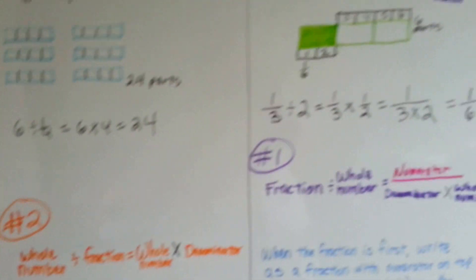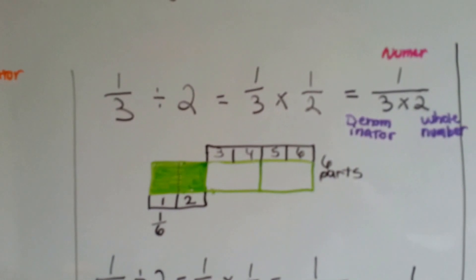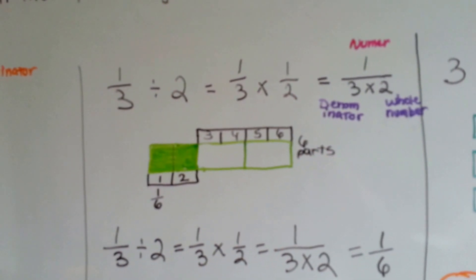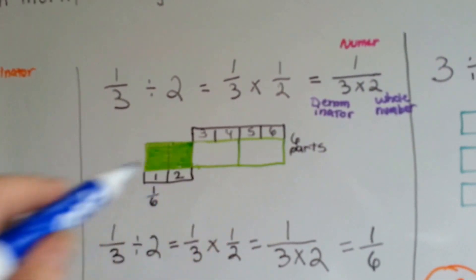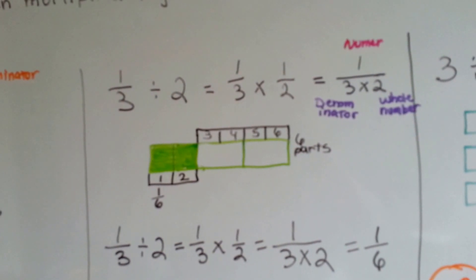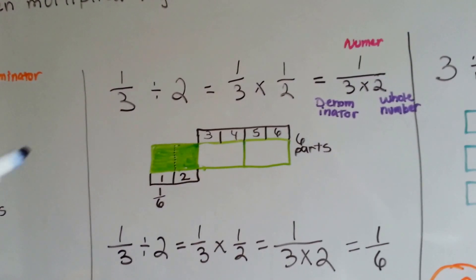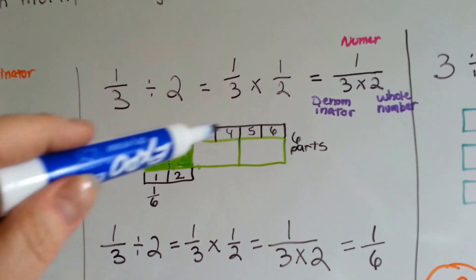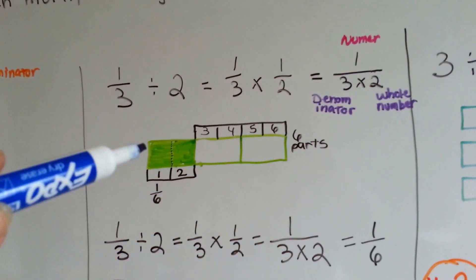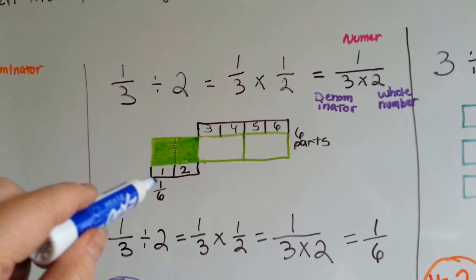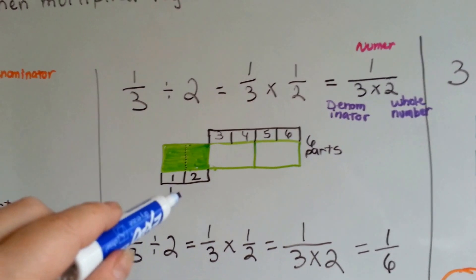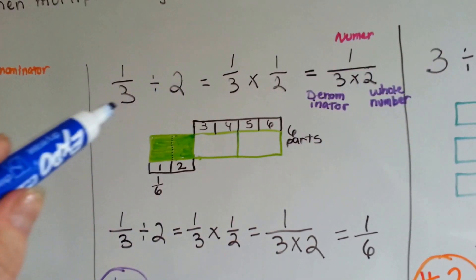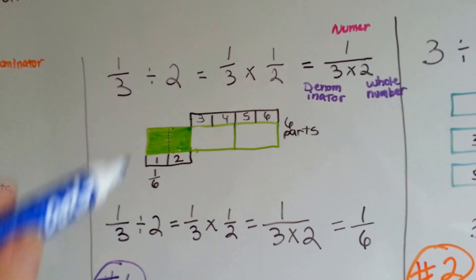Here's rule number 1 again. We have 1 third divided by 2. We have our green bar and it's split into thirds, so this big green area is 1 third of the green bar. It says to divide that third into 2, so I split it into 2 pieces. If I split all of the parts into 2 pieces, there are going to be 6 parts and half of this third is going to be 1 sixth. I put the numerator on top and multiplied the denominator by the whole number, and I got 1 sixth.